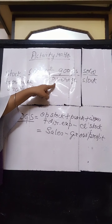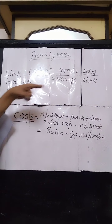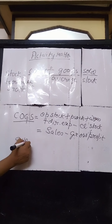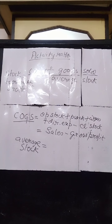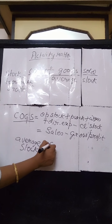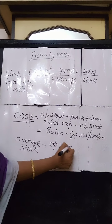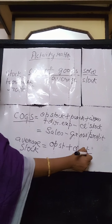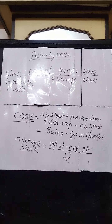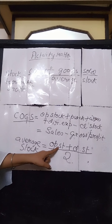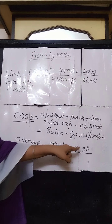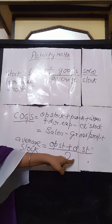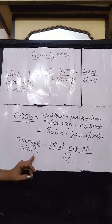The denominator of stock turnover ratio is average stock. Average stock is the average of opening stock and closing stock. The formula is: opening stock plus closing stock divided by 2. For example, if opening stock is 10,000 and closing stock is 7,000, then 10,000 plus 7,000 equals 17,000, divided by 2 gives 8,500 as the average stock.